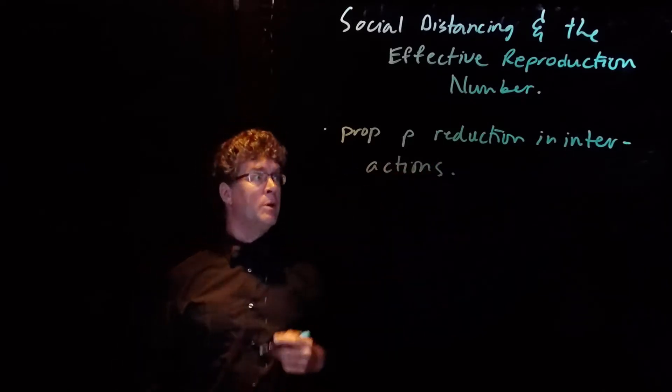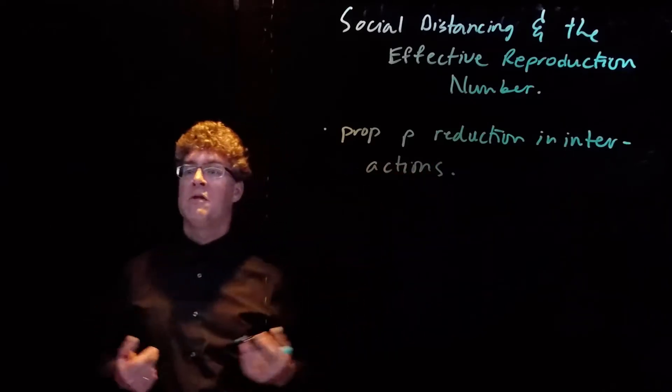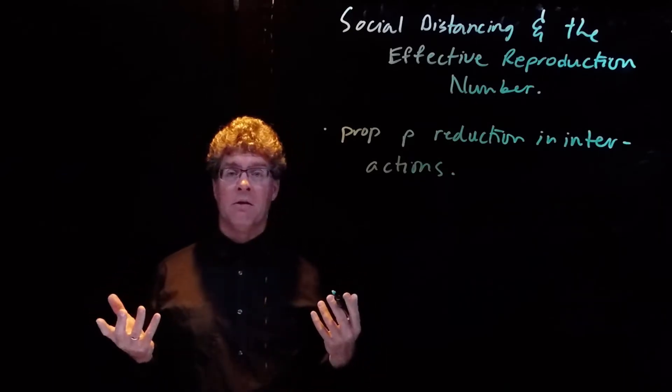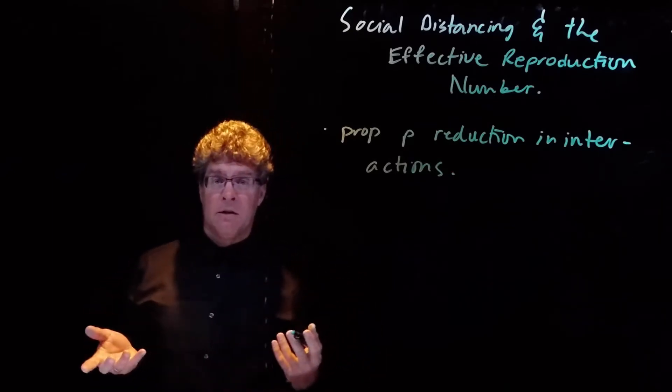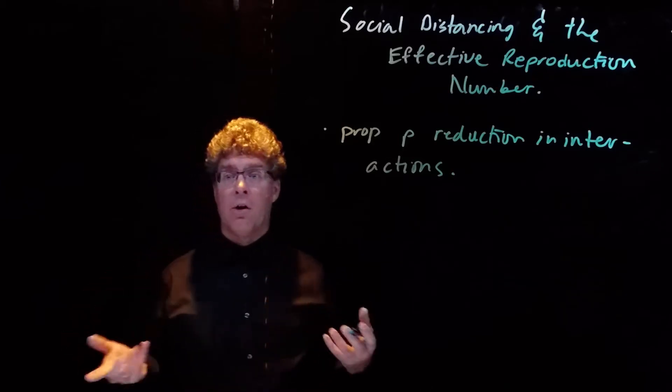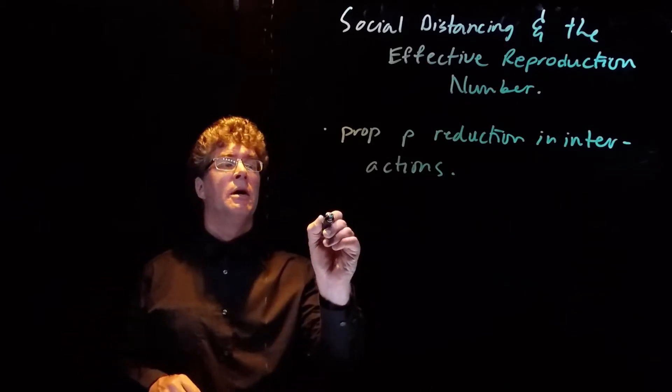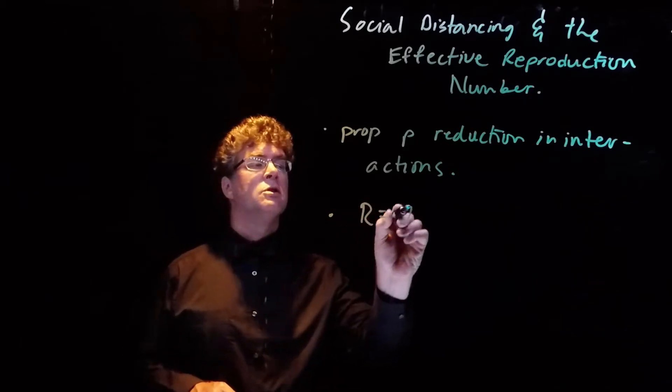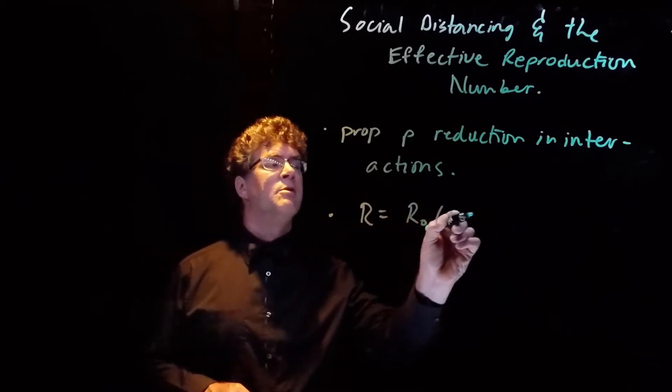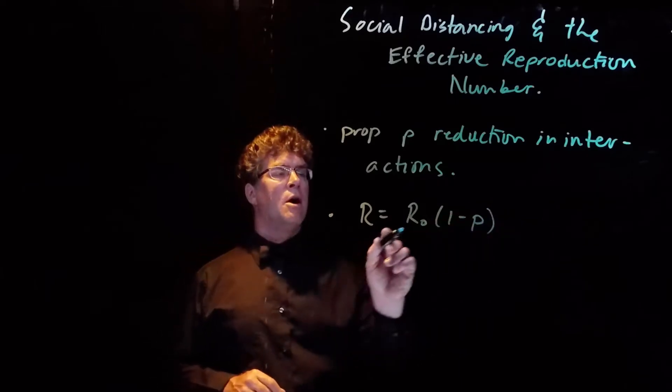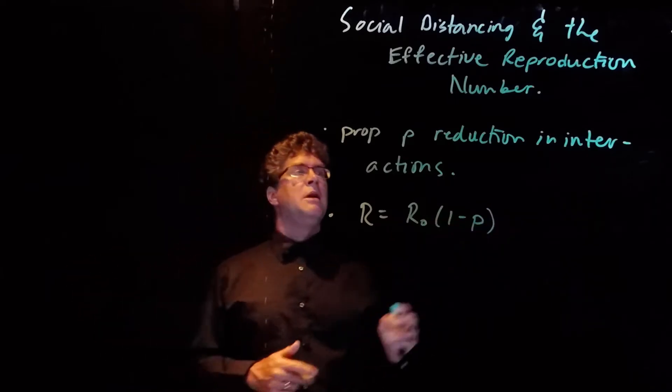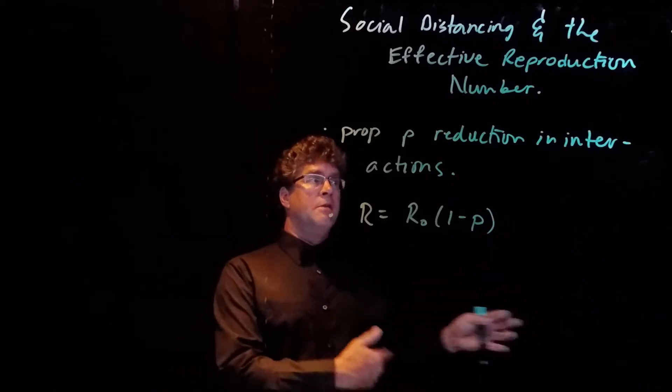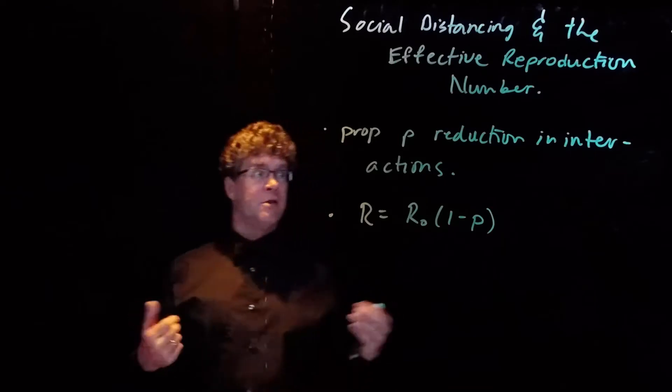And so there's a proportion p reduction in interactions through social distancing. So a socially distanced person will no longer infect R₀ people. Rather, they will infect, on average, R, which is R₀ times 1 minus p. R₀ is the old value, and 1 minus p is the proportion of social interactions that continue under social distancing.